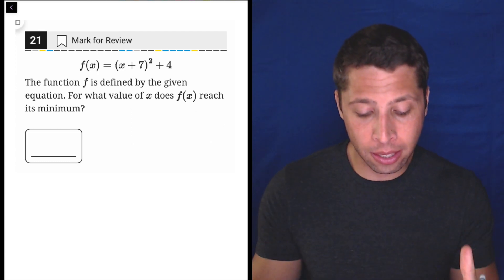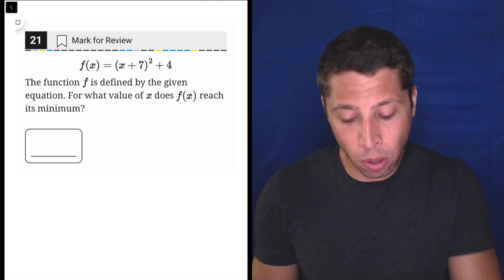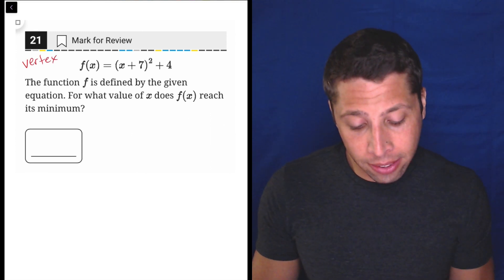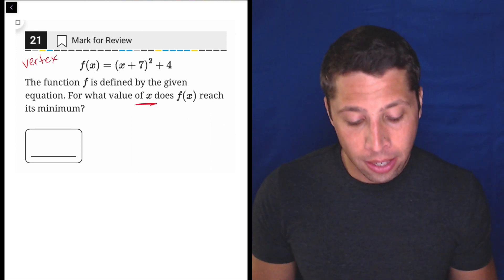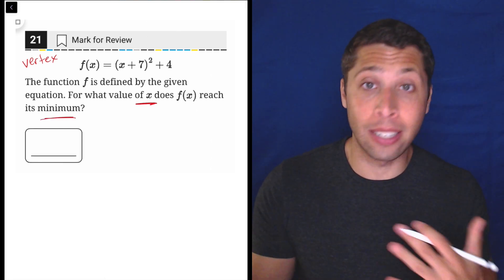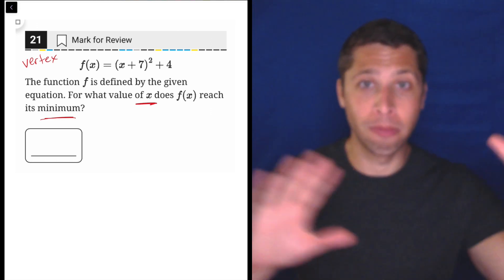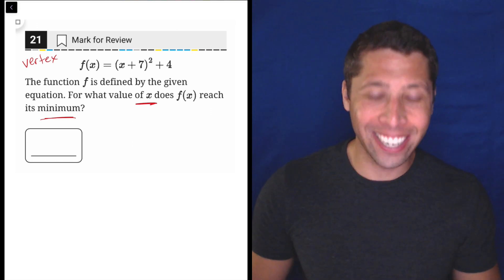Let's take a look. So they're giving us this quadratic. It is in what's known as vertex form. And they're asking us for what value of x does f(x) reach its minimum? Vertex and minimum are basically synonyms. The vertex is the point where a parabola turns. I'll show you that in a second.